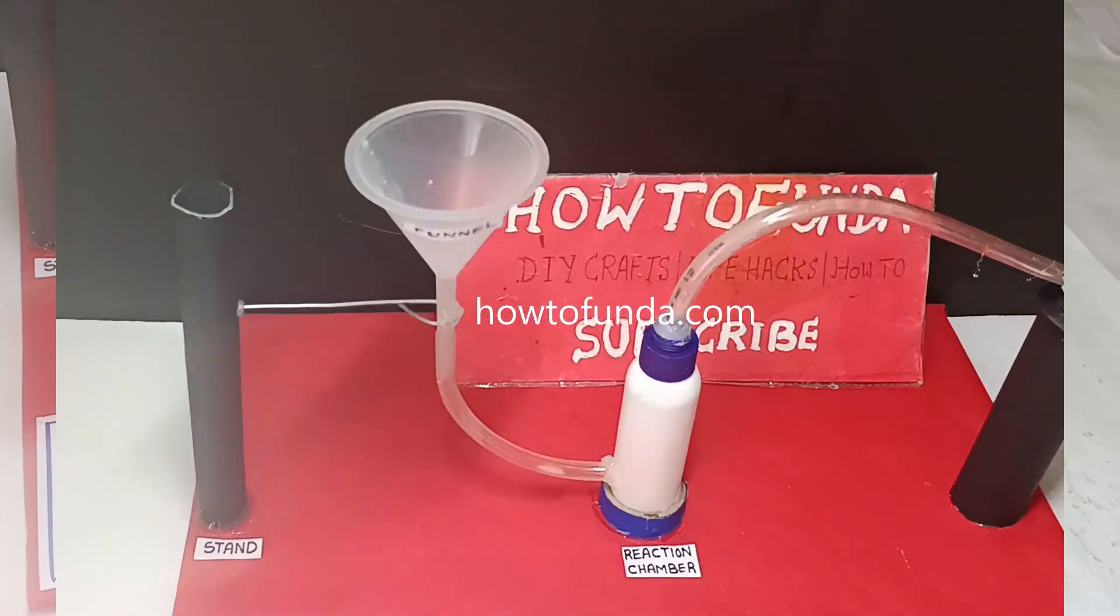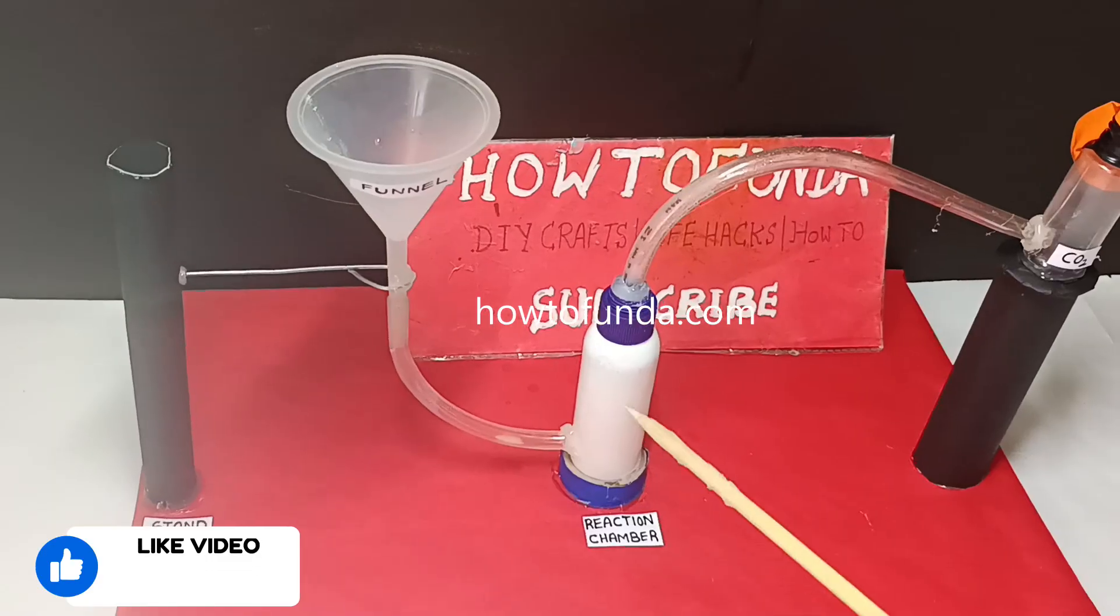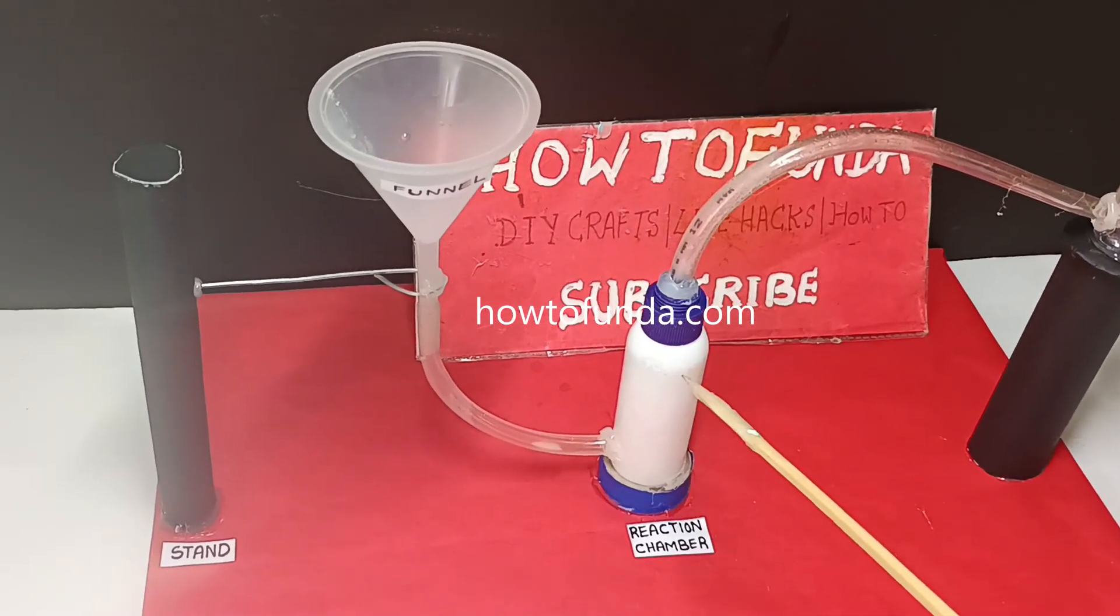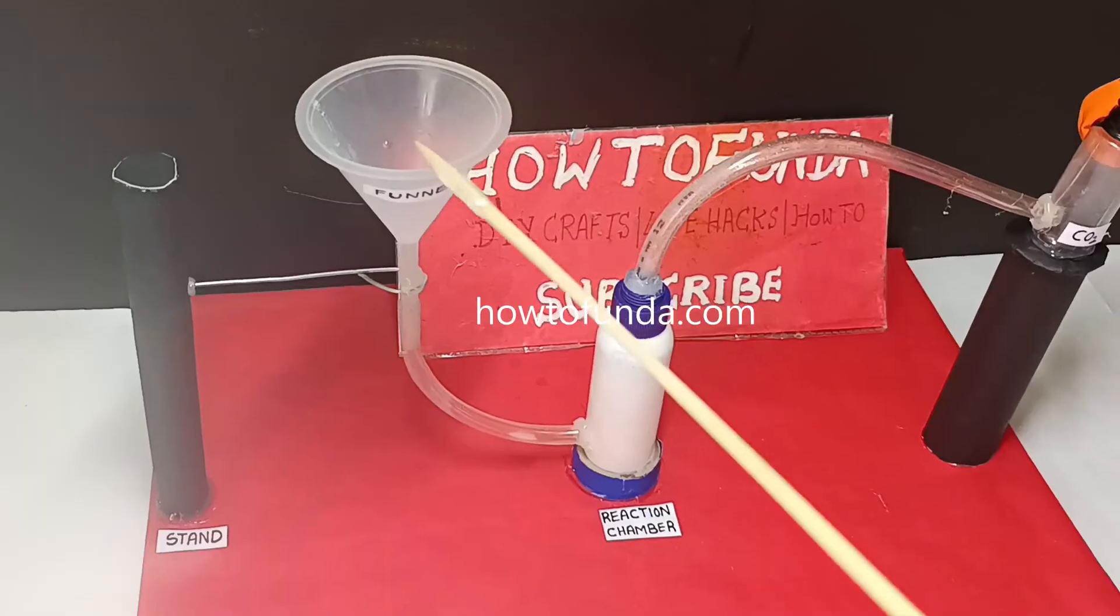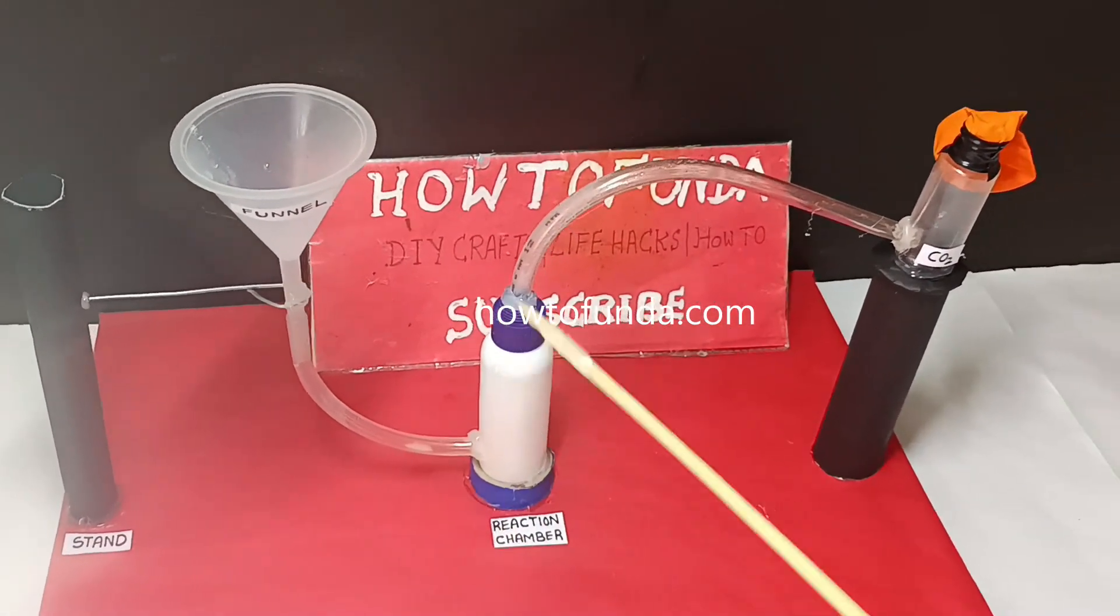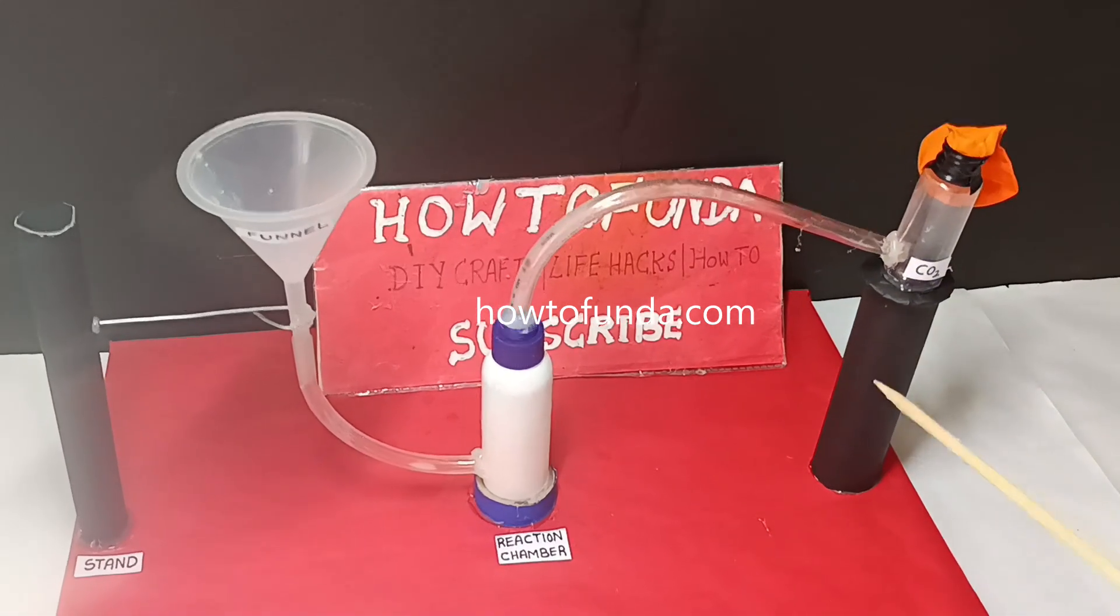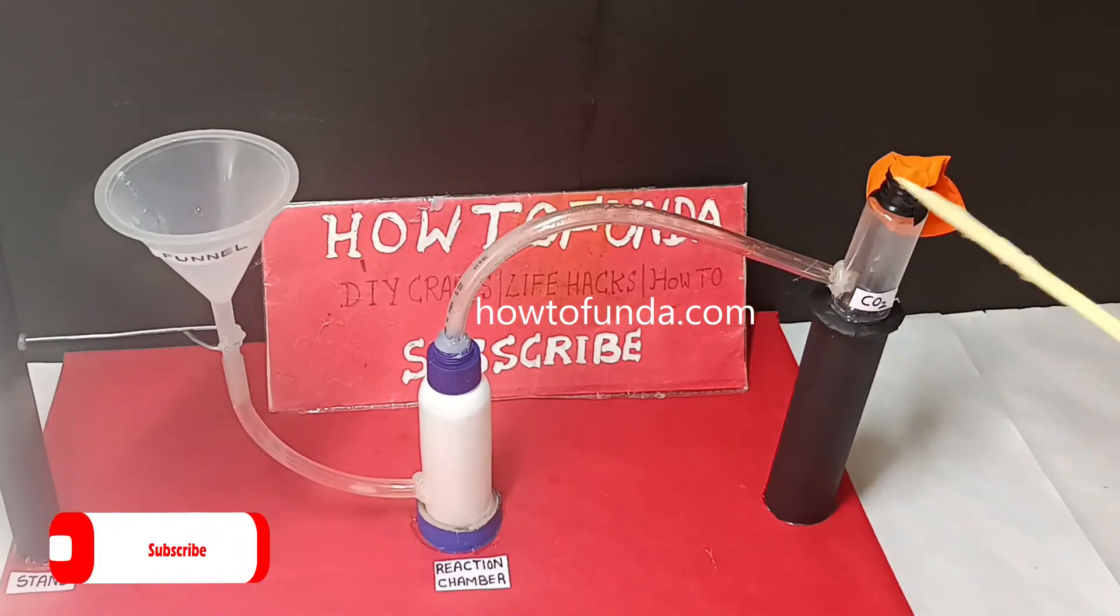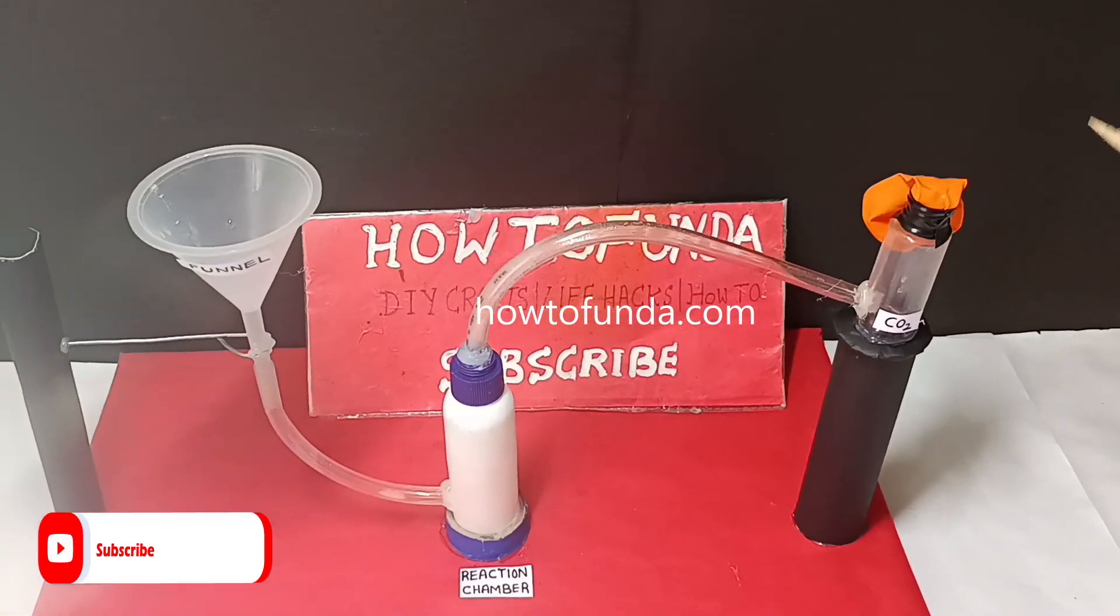Now we are going to demonstrate how this chemistry working model works. In this bottle, we have kept baking soda in the funnel. We are going to pour vinegar. When vinegar and baking soda get mixed, carbon dioxide is released. When the gas is released, this balloon is going to blow up. That is the output we are expecting.